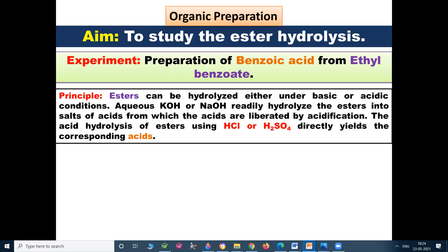The acid hydrolysis of ester using HCl (hydrochloric acid) or H2SO4 (sulfuric acid) directly yields the corresponding acids.